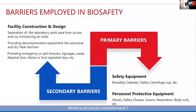Physical containment is of two types: primary barriers and secondary barriers. The primary barriers are the equipment used while handling biohazards. This would include biosafety cabinets,